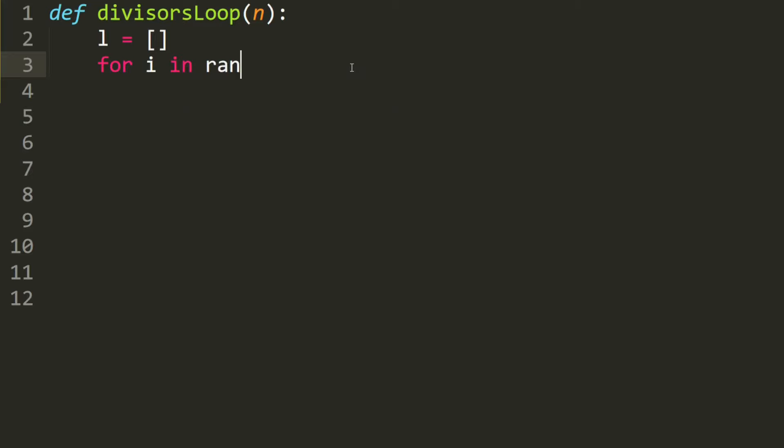Let's do the for loop. So for i in range from 1 to n plus 1. Basically, you can think of it as from 1 to n inclusively. So if n can divide i, so it means n mod i, and the remainder is 0,